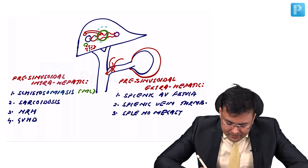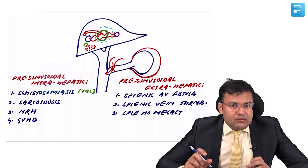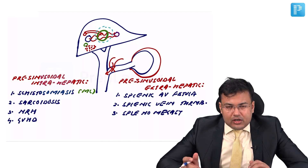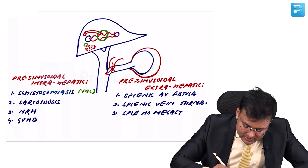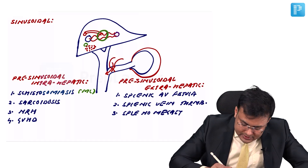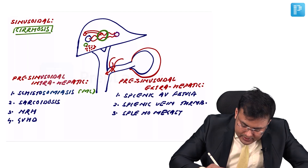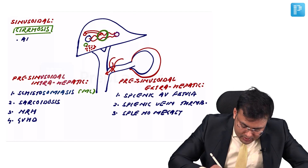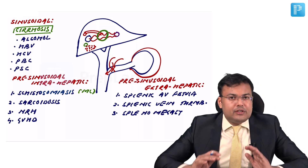Coming to the sinusoidal causes — conditions around or within the sinusoid — these include the causes of cirrhosis: most commonly alcohol, followed by hepatitis B virus infection, hepatitis C virus, primary biliary cirrhosis, and primary sclerosing cholangitis.